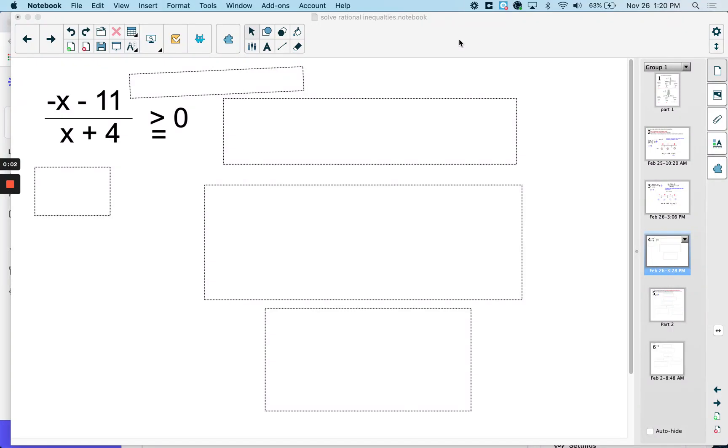This last video for solving rational inequalities comparing to zero just has some extra negatives in it, so I want to be careful. Where is this rational inequality, or is this fraction ratio, greater than or equal to zero? First thing is x can't be negative 4, because that would make the denominator zero.